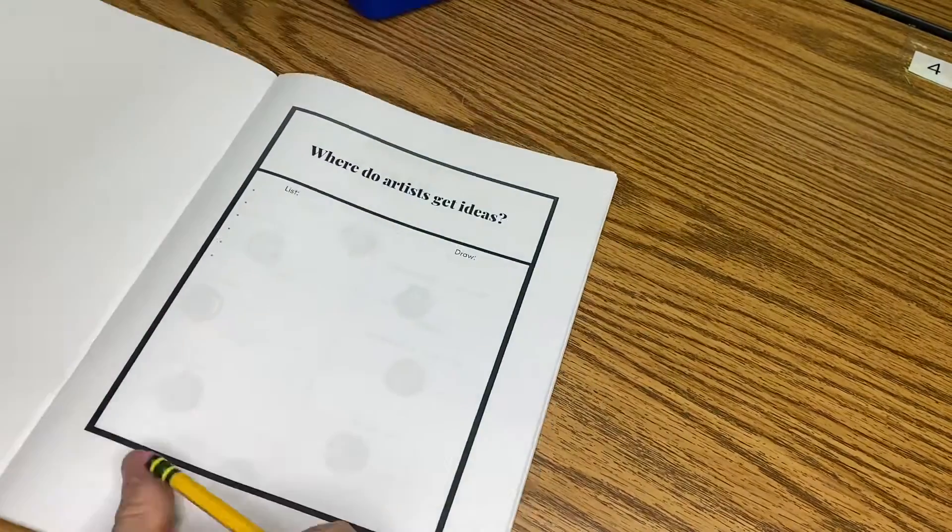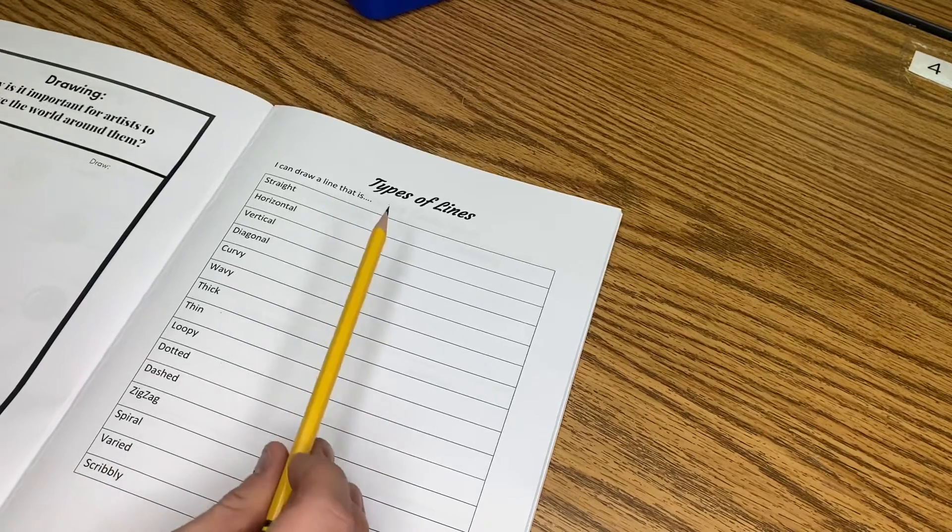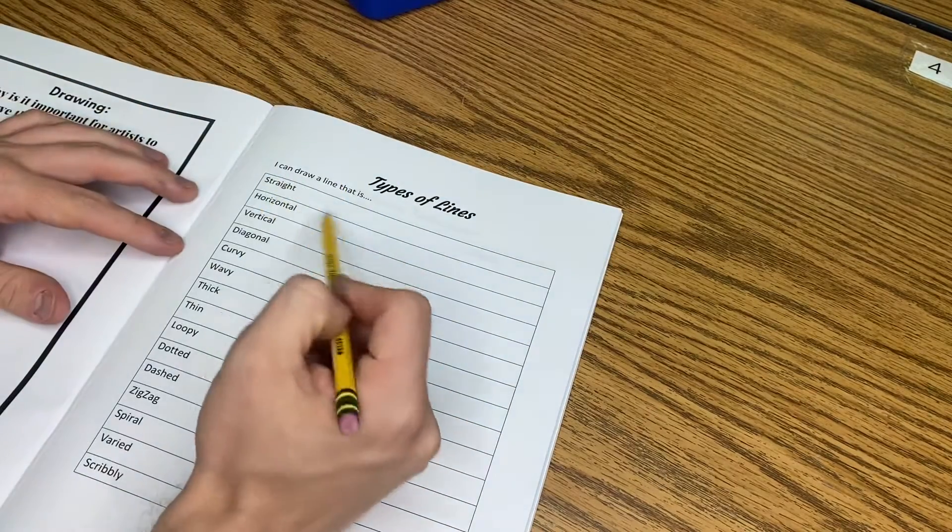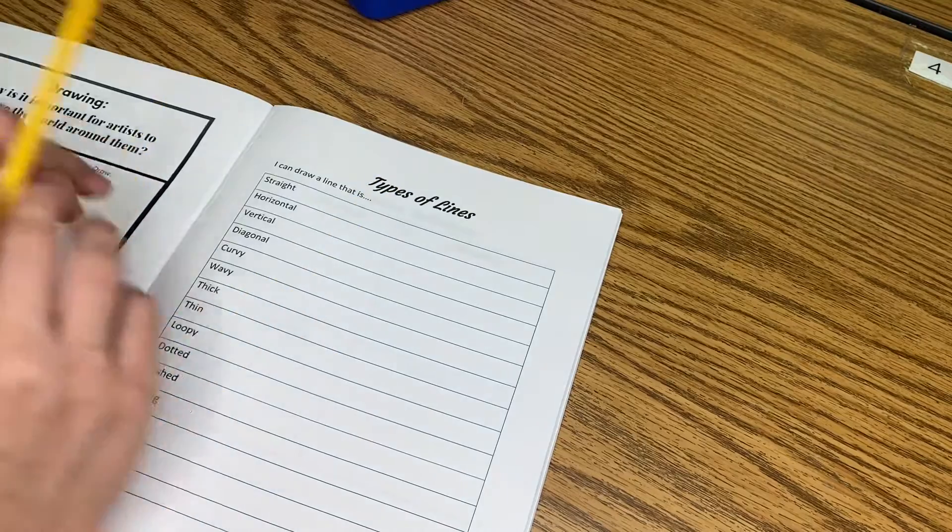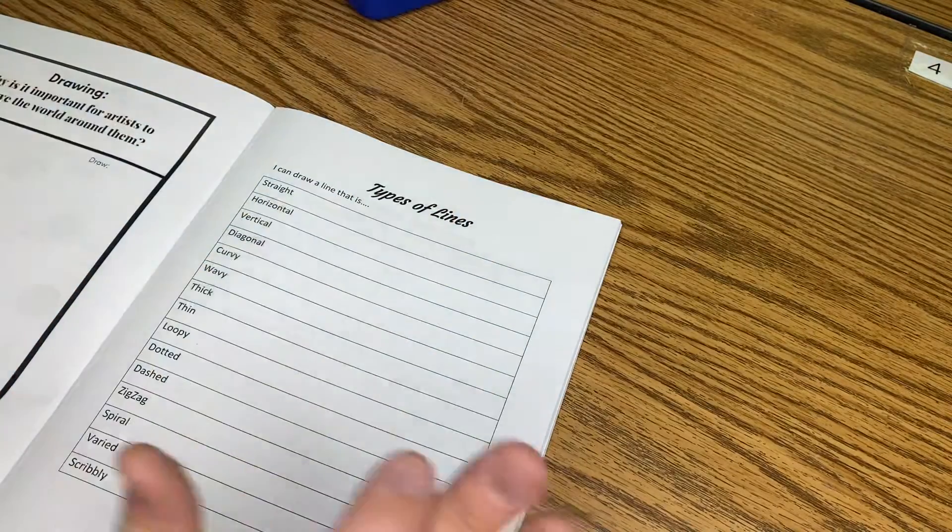Next we're going to go to page five. I'm going to see what you guys remember about your types of lines. Lines are not always drawn. They're things that you can see. And then today we're actually going to be printing them and using our muscles. Take one image and move it to another. It'll make more sense once we start.